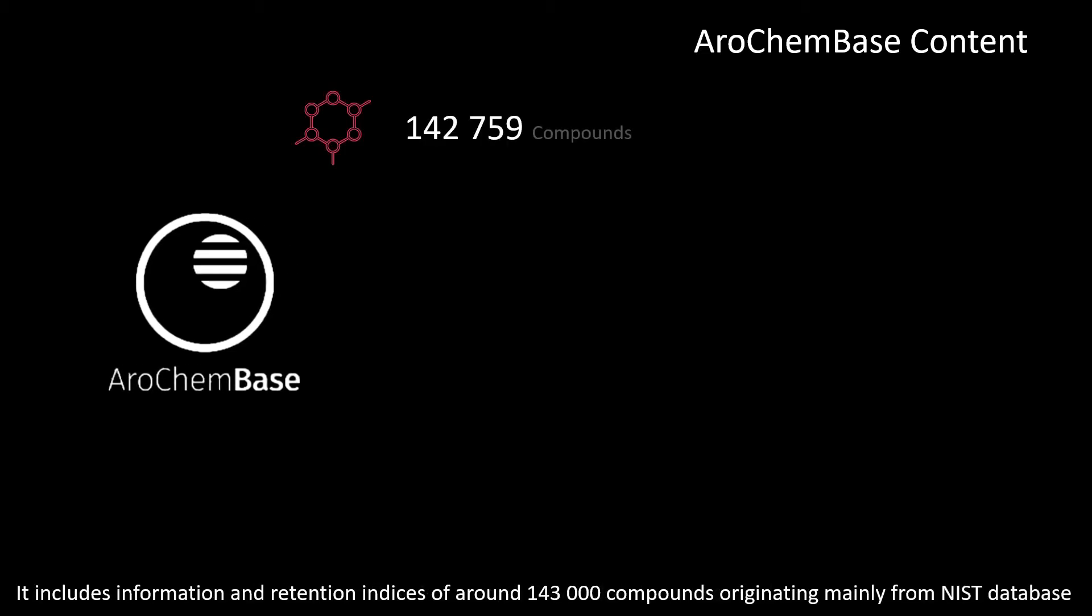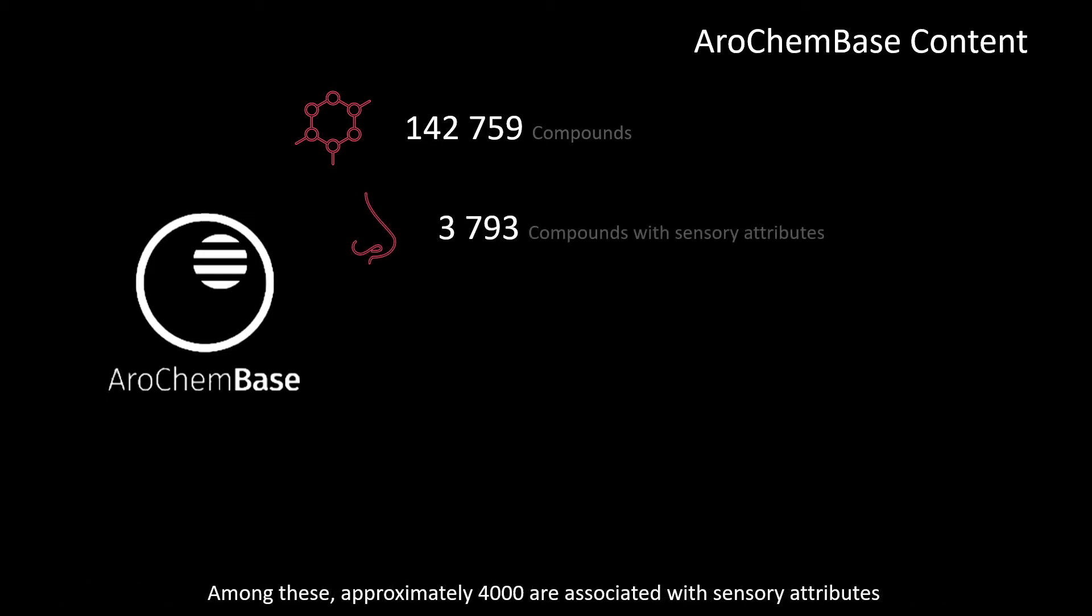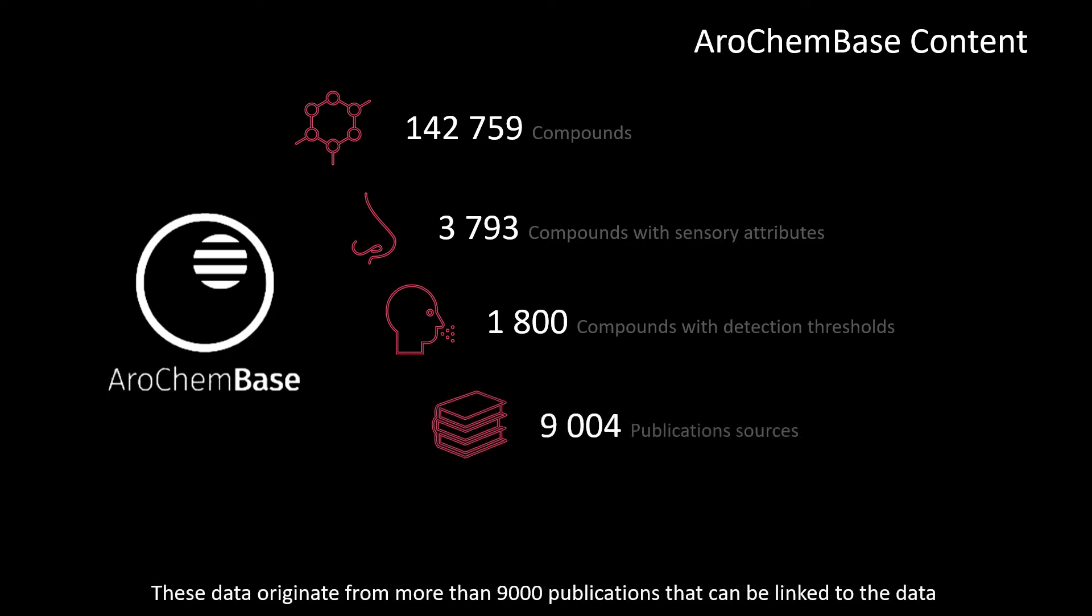It includes information and retention indices of around 143,000 compounds originating mainly from NIST database. Among these, approximately 4,000 are associated with sensory attributes, and 1,800 include human detection and recognition thresholds. These data originate from more than 9,000 publications that can be linked to the data.